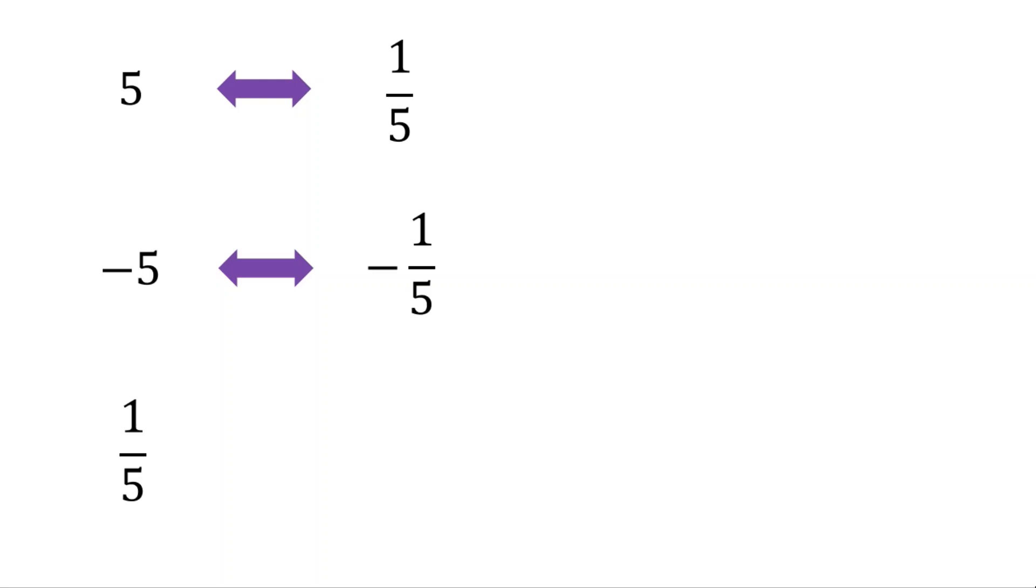Now the reciprocal of 1/5—we can think of this in a few ways. I would personally think of it in terms of what we call stacked fractions. So 1 over 1/5, and then times both the numerator and the denominator by 5. That's one way to think about this.